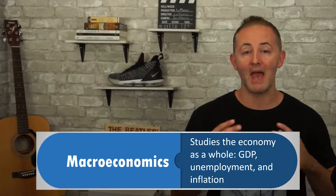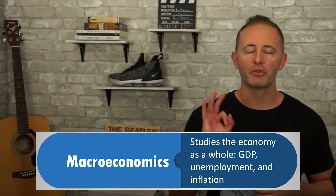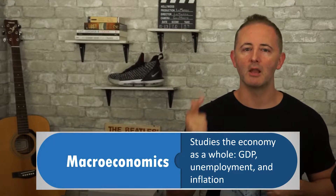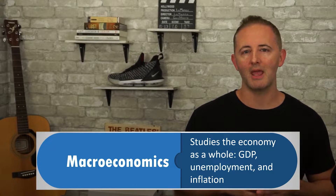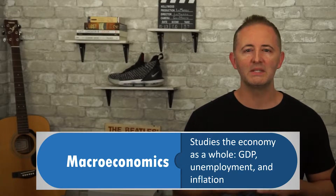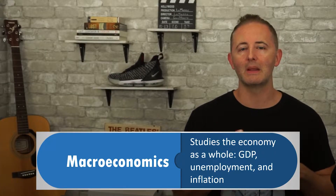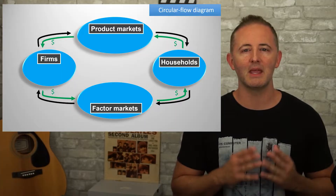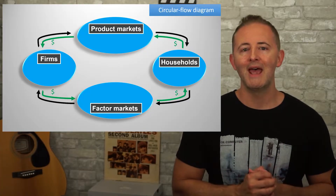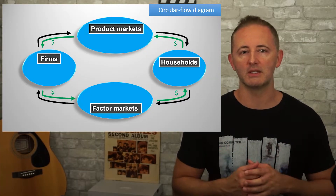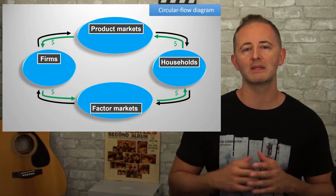Macroeconomics attempts to study the economy as a whole, primarily through three main measurements: GDP, unemployment, and inflation. In other words, how much stuff we're producing, the state of the job market, and how much the stuff costs. This unit is all about introducing you to each of these measures, learning how to calculate them, as well as considering the limitations of each one. Before we get to GDP, we're actually going to start with the circular flow diagram, which is basically a simplified model of the economy. It displays two groups, households and firms, and shows how they interact in two types of markets, product and factor markets.